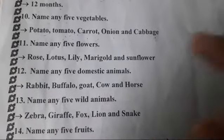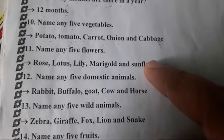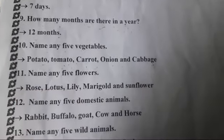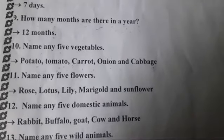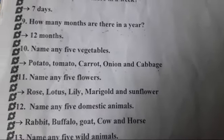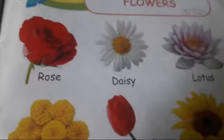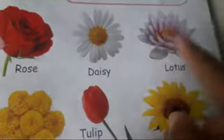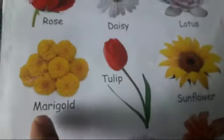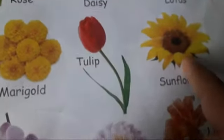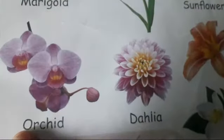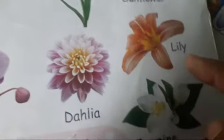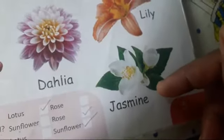Name any five flowers — rose, lotus, lily, marigold and sunflower. Look at here children, flowers name: rose, daisy, lotus, marigold, tulip, sunflower, orchid, dahlia, lily and jasmine.